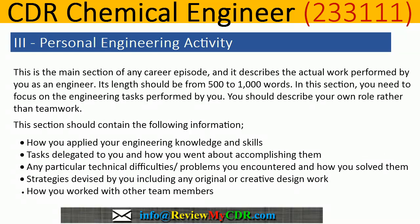The third and most important section is Personal Engineering Activity. This is the main section of any career episode and describes the actual work performed by you as an engineer. Its length should be 500–1,000 words. You need to focus on engineering tasks performed by you and describe your own role rather than teamwork. This section should contain: how you applied your engineering knowledge and skills, tasks delegated to you and how you accomplished them, any technical difficulties or problems you encountered and how you solved them, and strategies devised by you including any original or creative design work.